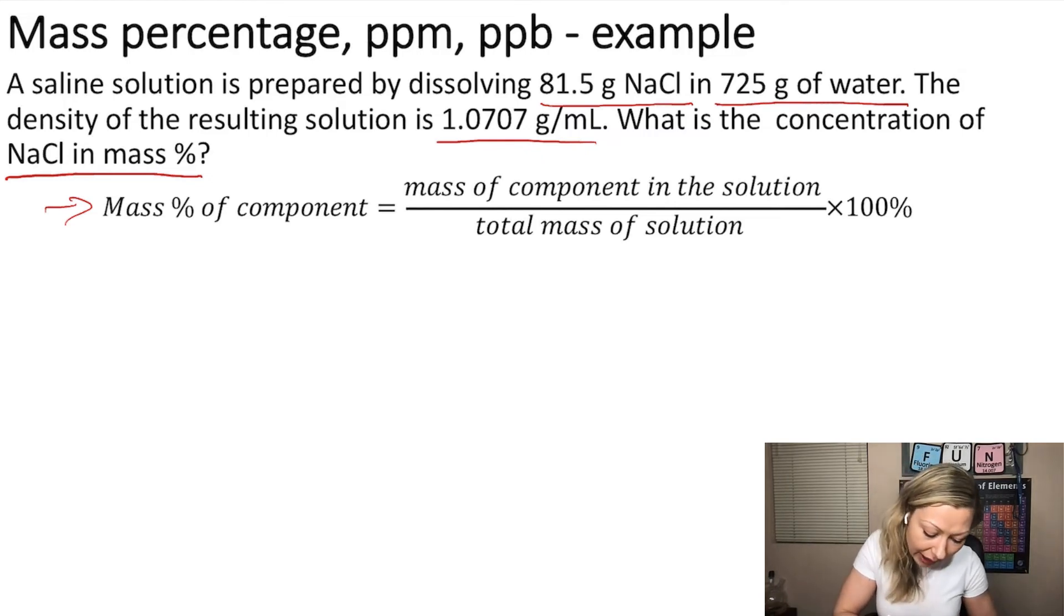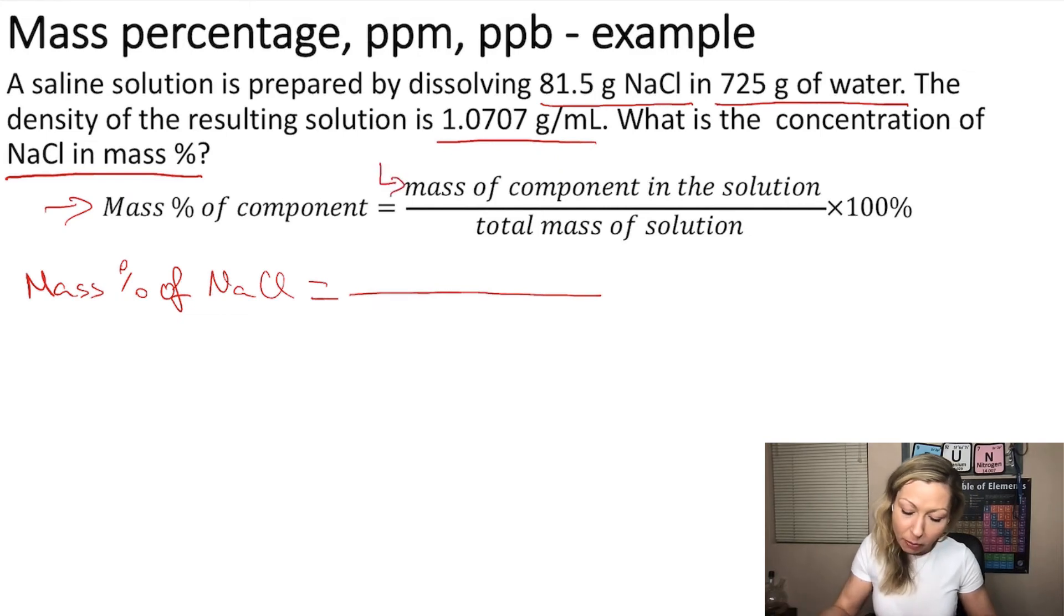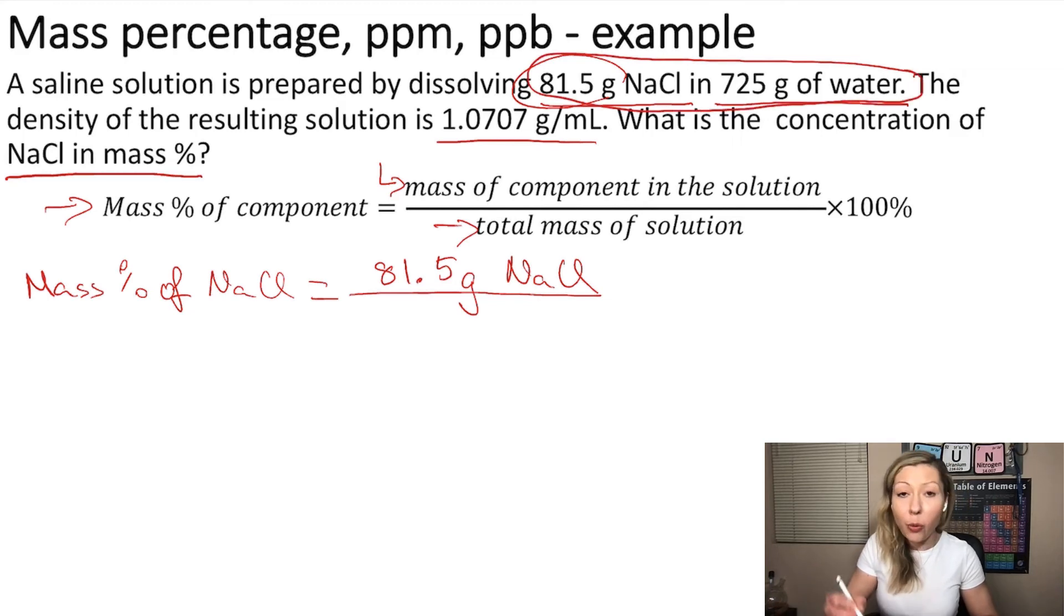Okay, so let's calculate the mass percent of NaCl in this solution. So we first need the mass of component and we know that we had 81.5 grams of NaCl and then we have to divide it by the total mass of solution, which is going to be given by the sum of the mass of water plus NaCl.